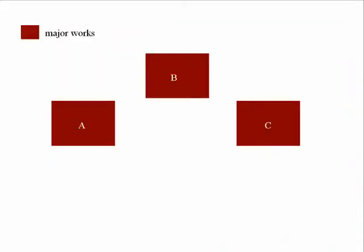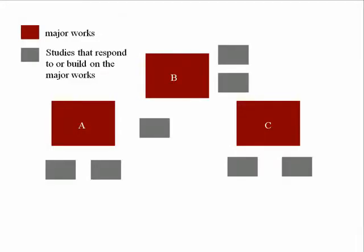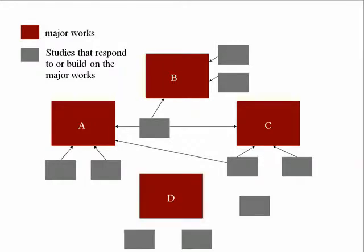Visually, the literature might look like this. Often there are major works that have been written on a topic, and then other later works that build on them. These later works tend to be extending or responding to the original papers in some way. Basically, the literature is a continuously evolving network of scholarly works that interact with each other.